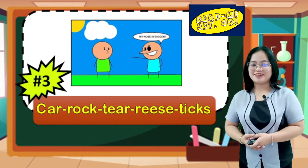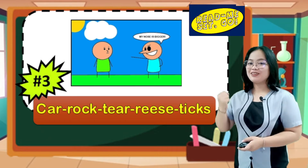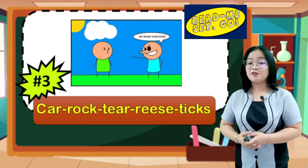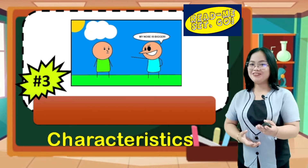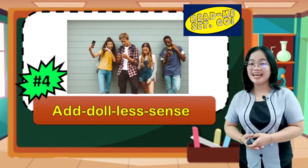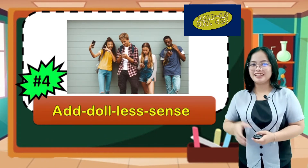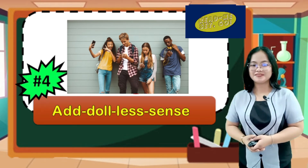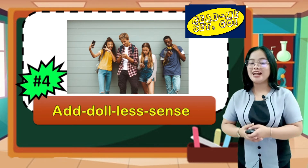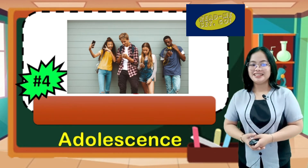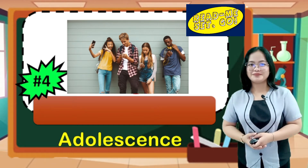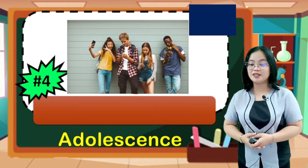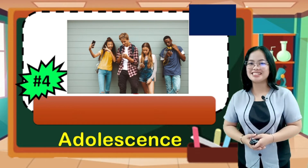For the third magic word — ready, set, go! If your answer is 'characteristics,' you are excellent! For the fourth and last magic word — ready, set, go! If your answer is 'adolescence,' you are superb! I am glad that you have answered our game. Remember those words as we go along with our lesson for today.